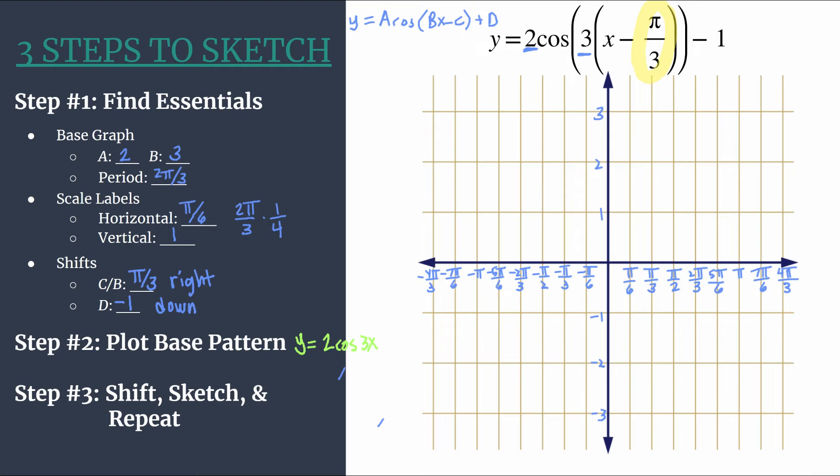Know our cosine base pattern is maximum zero, minimum zero. We know that we do not have a vertical reflection here. So we're going to stick with that. And let's go ahead and plot our first point in the base pattern. Again, remembering to do this lightly.